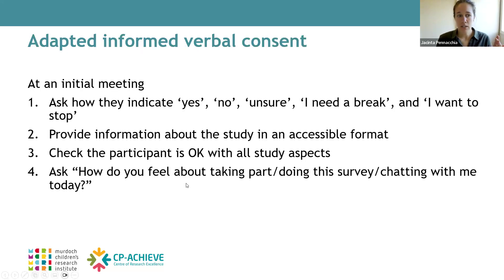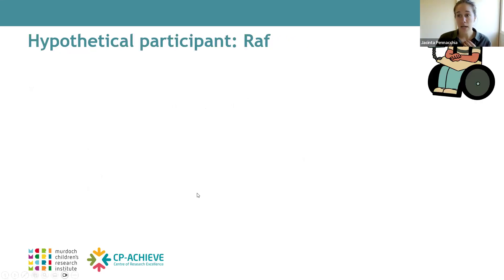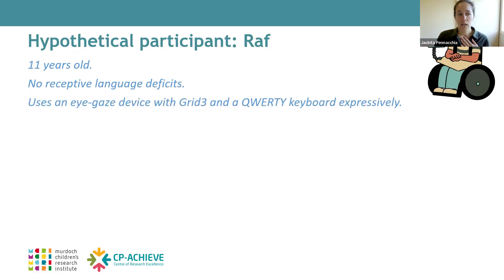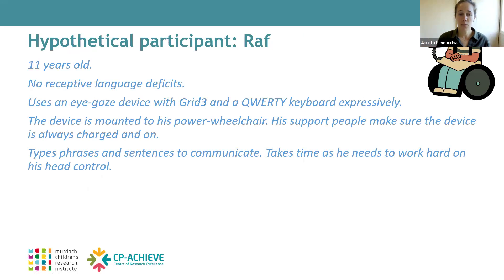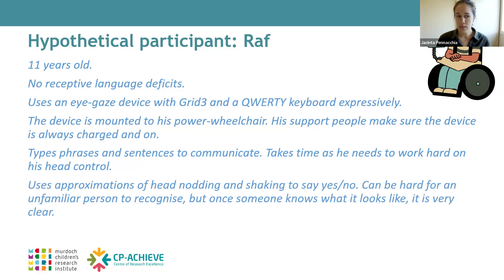I included all those steps in my study protocol, and I also included some hypothetical participants and vignettes to describe what it might look like in practice. The first is Raf, he's 11. He has no receptive language deficits and uses an eye gaze device with a RIGS 3 and QWERTY keyboard expressively, mounted to his power wheelchair. He types phrases and sentences to communicate, though it takes time as he works hard on head control. He also uses approximations of head nodding and shaking to say yes and no.